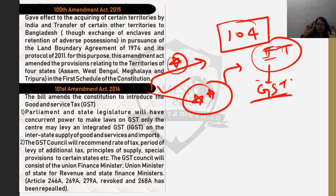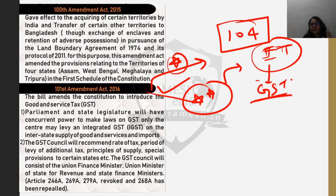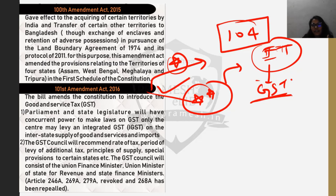Under GST, if you move any good across India from one state to another, you will have a uniform tax rate. That means if you buy a car in Punjab versus a car in Haryana, you should be charged approximately the same amount of tax. GST is important because it has harmonized the taxation system, made it uniform, and removed the cascading of taxes.